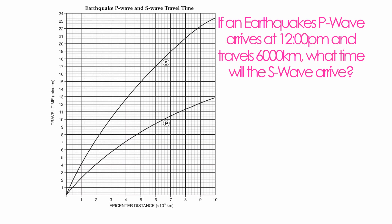Here's another example. An earthquake arrives at you at 12:00 p.m. and it travels six thousand kilometers. We want to know what time the S-Wave will arrive. Look for keywords like 'arrives' and 'travels.' Find six thousand kilometers on the horizontal axis, follow it straight up to the P-Wave — the P-Wave is going to take about nine minutes and twenty seconds to travel six thousand kilometers.